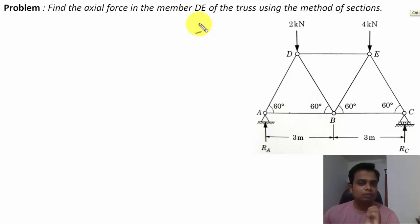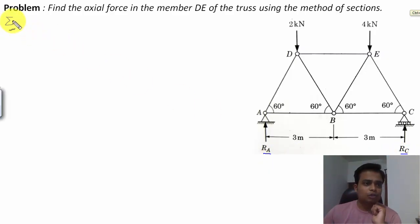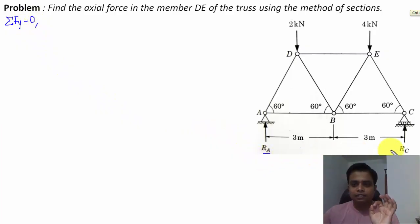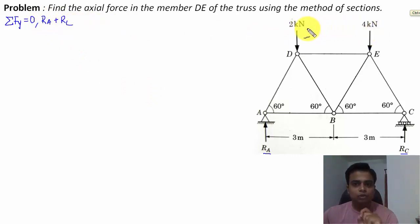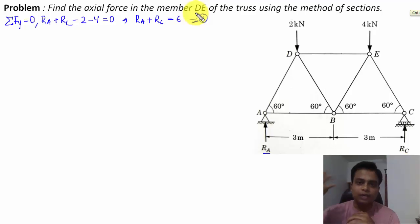Whenever you try to solve any problem based on plane truss, always try to calculate the reactions at supports. So initially we'll be getting the values of RA and RC. Using the equation of equilibrium — summation of all forces in the y-direction equals zero — RA and RC are upwards (positive), and the 2 kN and 4 kN loads are downwards (negative). So RA plus RC minus 2 minus 4 equals 0, giving us RA plus RC equals 6. Let's call this Equation 1.